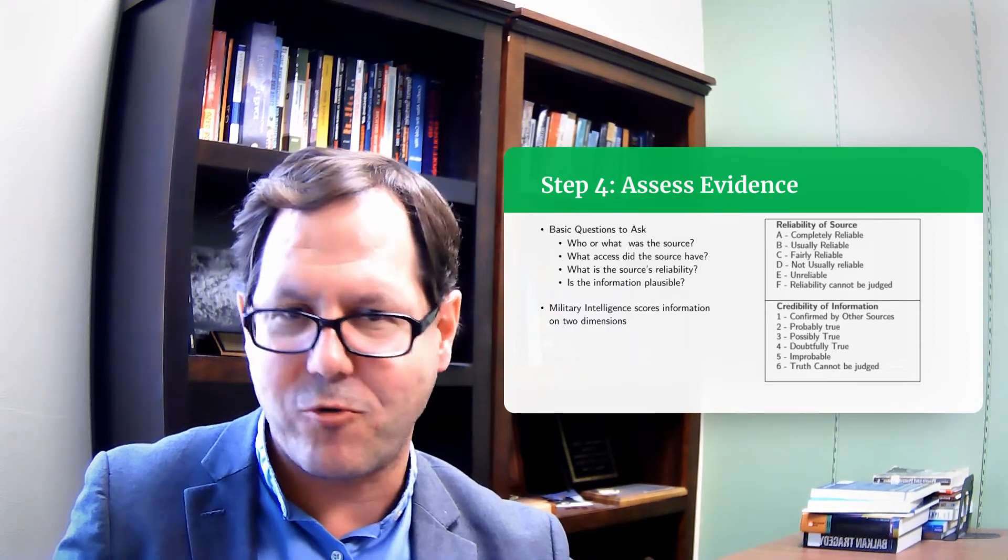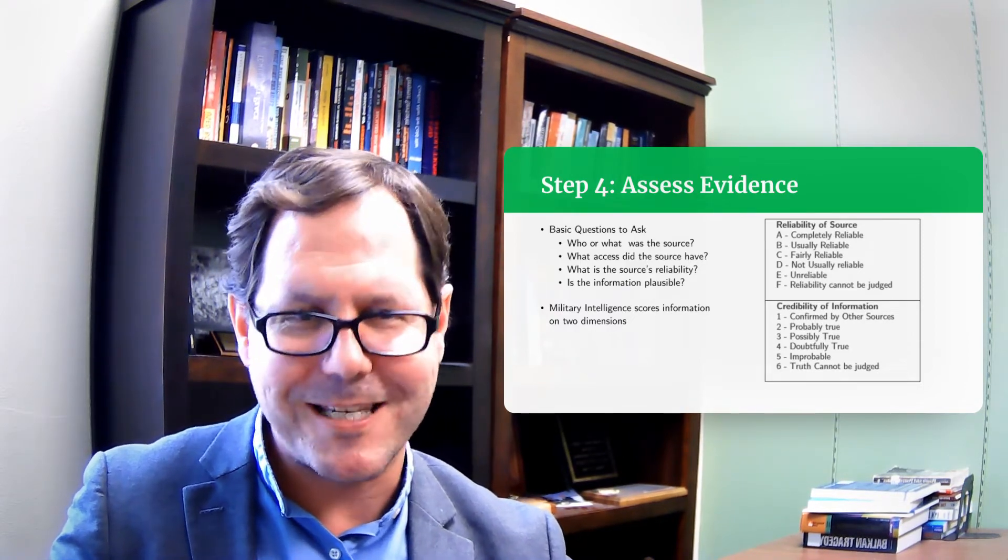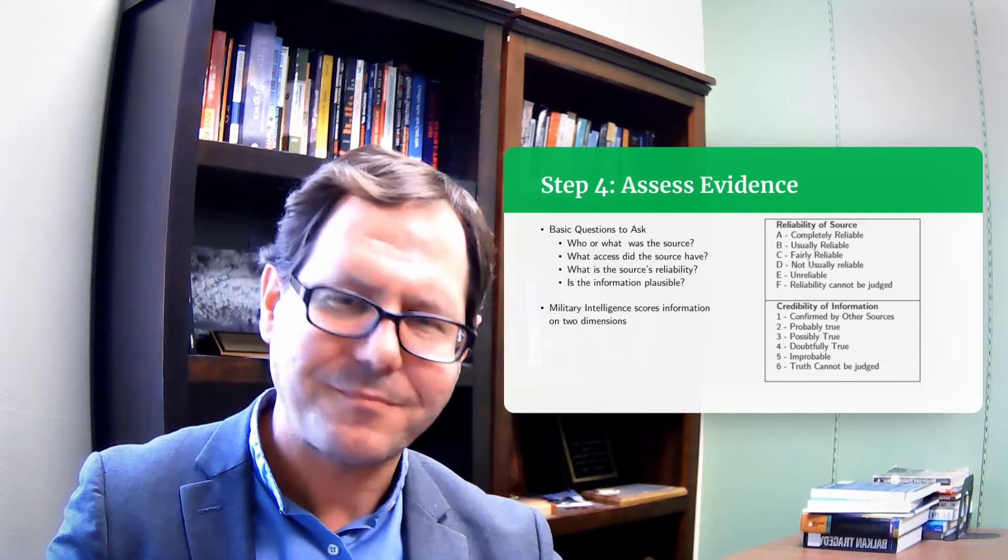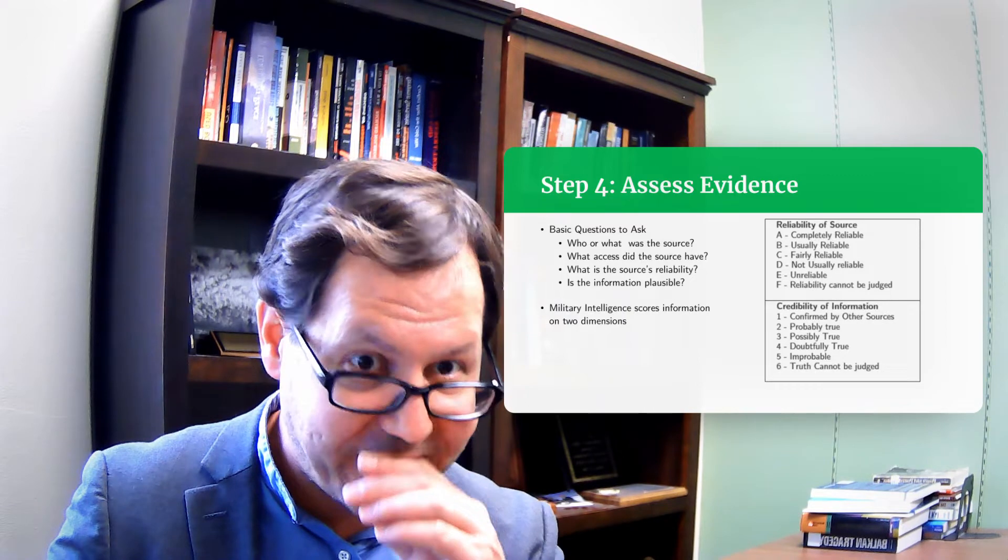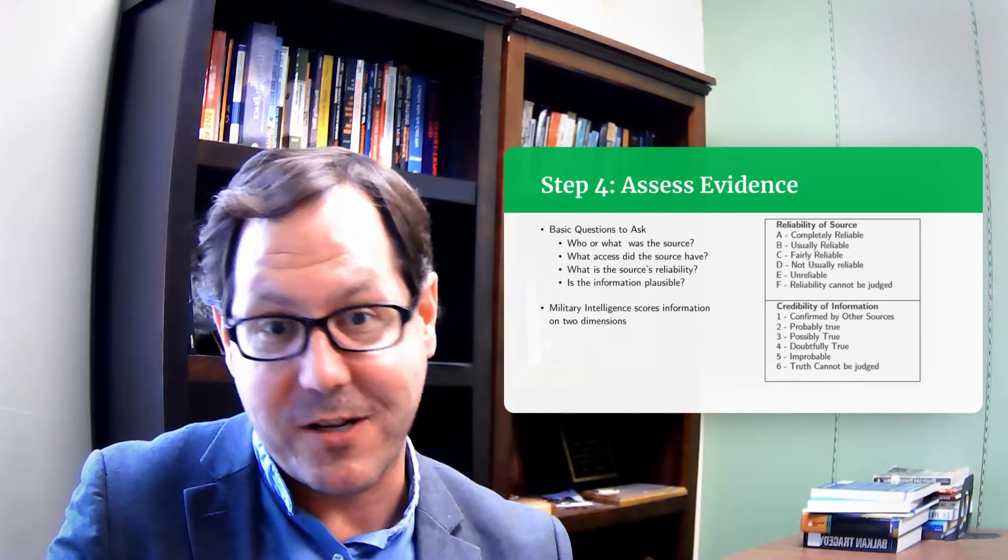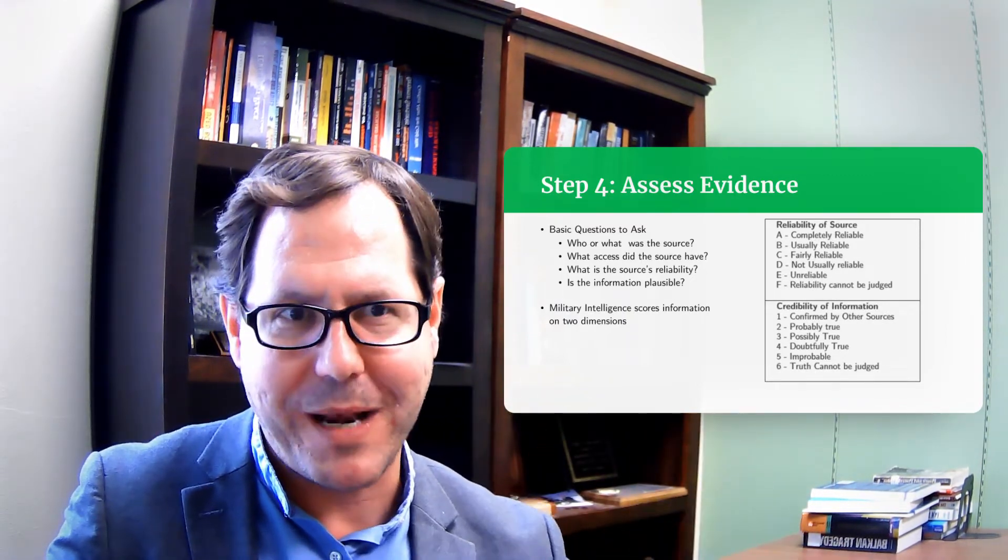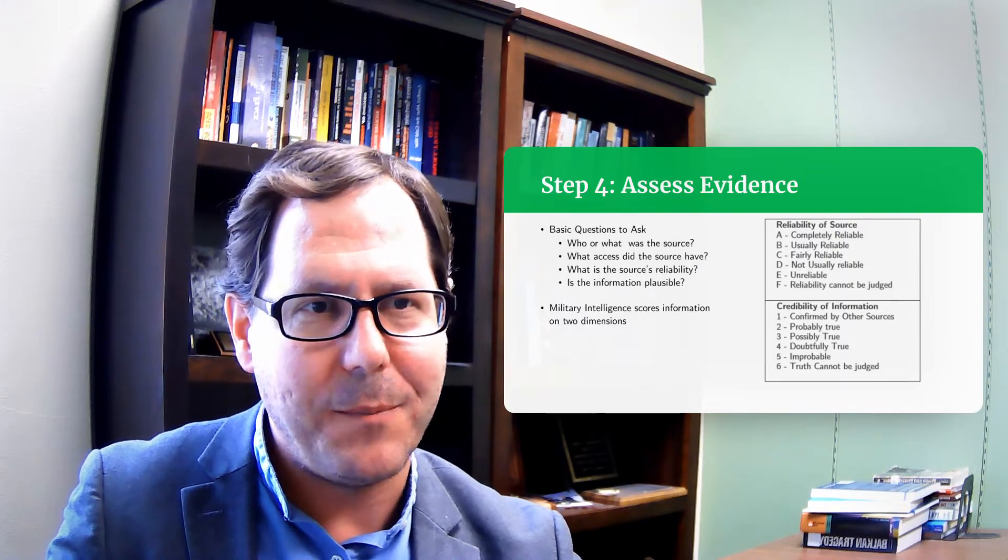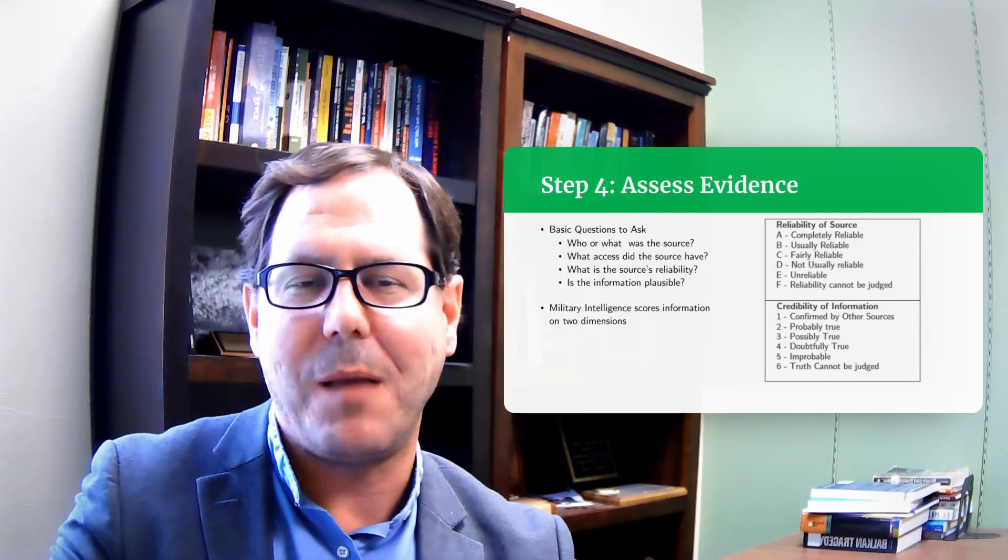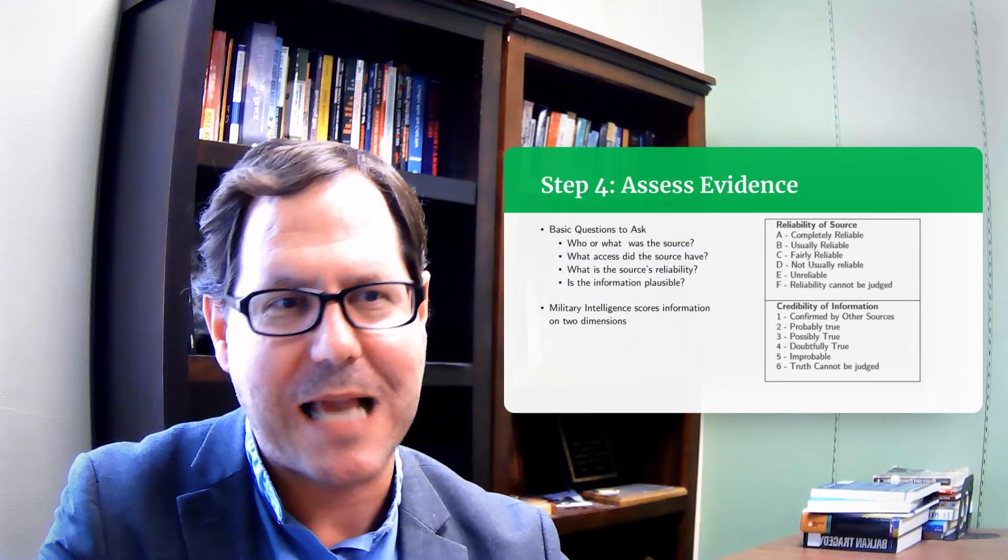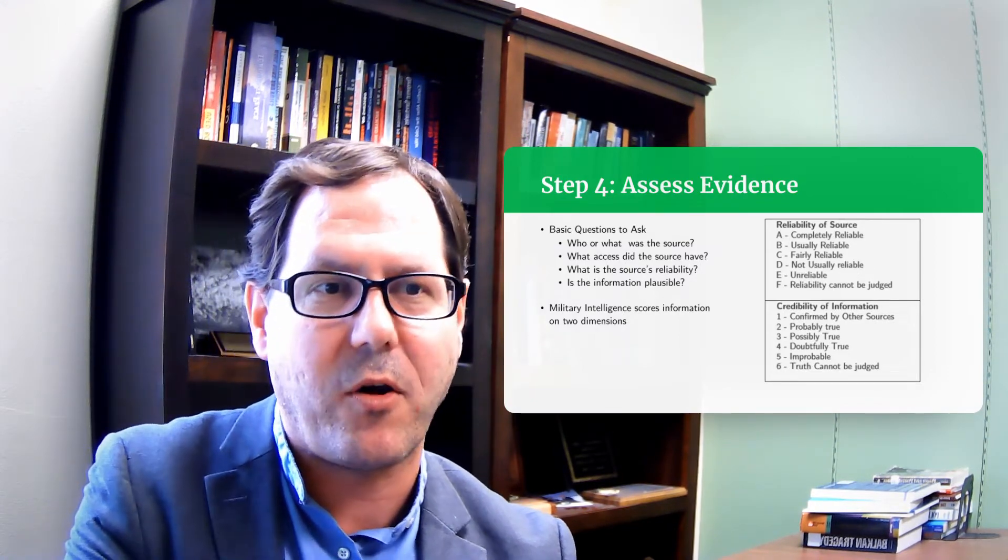Versus on the other end of the spectrum, this person has all sorts of incentives to betray us or to give us bad information, and the information they've given us before has been bad. So we're going to score them at F where the original example got an A, or maybe we just don't know. Actually, unreliable should be an E. F is I don't know. I don't have enough information to judge what's going on here.